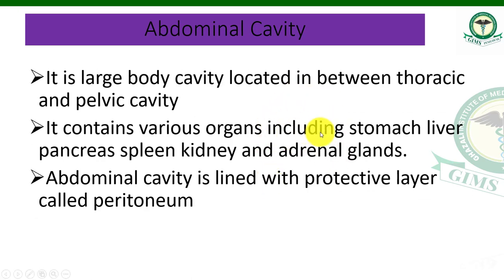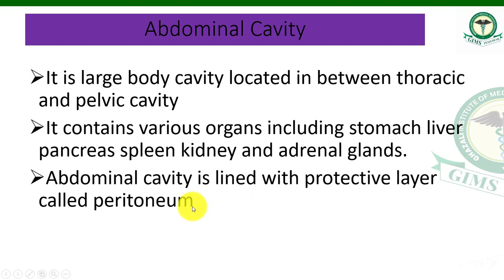It contains various organs including the stomach, liver, pancreas, spleen, kidneys, and other organs as mentioned in previous slides. The abdominal cavity is lined with a protective layer called the peritoneum — think of it as a plastic-type sheet; this protective layer is called the peritoneum or peritoneal layer.